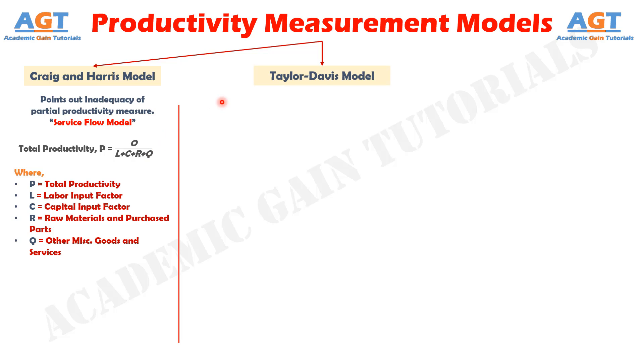Now let's discuss the Taylor-Davis Model. In the Taylor-Davis Model, in contrary to the Craig and Harris Total Productivity Model, they defined a Total Factor Productivity Model.